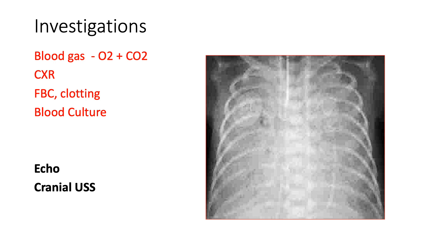If you have a trained person in the unit, or you're trained yourself, perform an echo to check for a significant PDA that may be causing the pulmonary hemorrhage. At the same time, do a cranial ultrasound to check for any associated intraventricular hemorrhage.